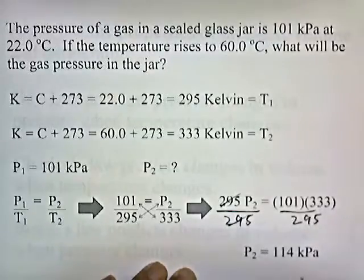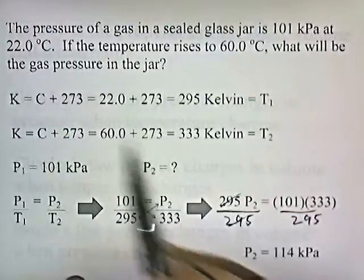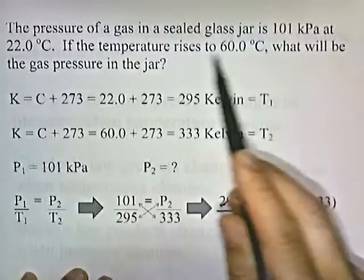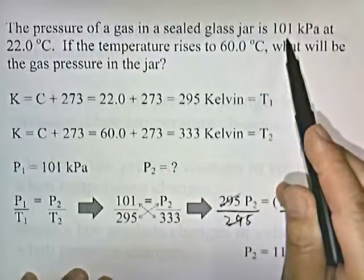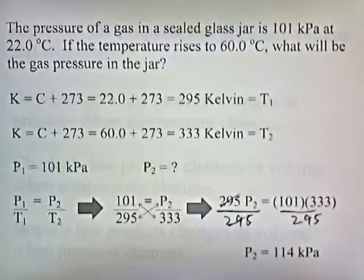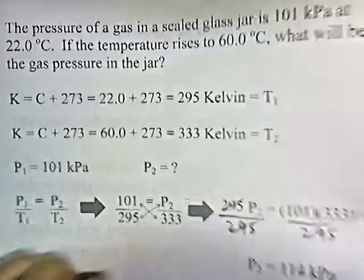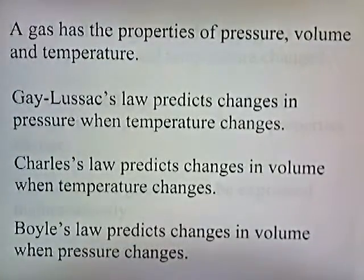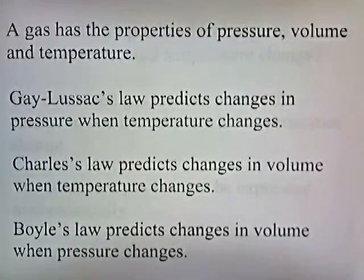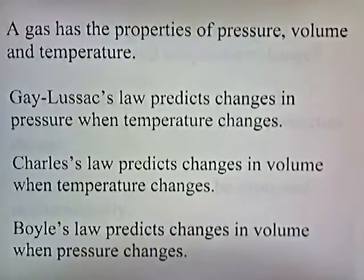This is a rounded answer — the actual answer is approximately 114.01-something — but we round to three significant digits. Does the answer make sense? We predicted that if the temperature increases from 22 to 60 degrees Celsius, the pressure should increase, and it does go from 101 to 114 kilopascals. That answer makes sense. Gas has the properties of pressure, volume, and temperature. Gay-Lussac's Law predicts changes in pressure when the temperature changes.